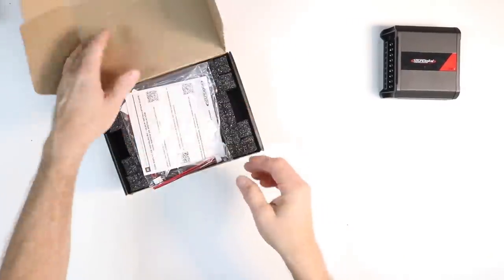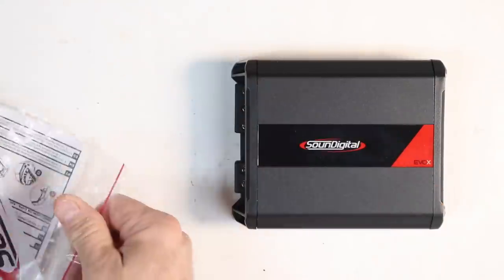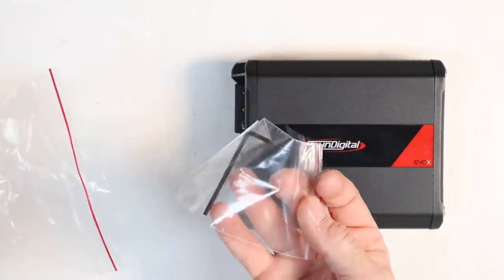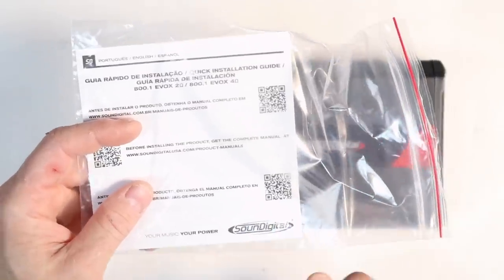Opening the 801, inside the box you find a similar bag, sound digital sticker, allen key, a single high level plug and of course the quick start guide with a QR code on the back.